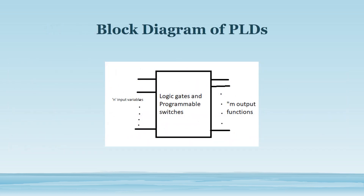This is the general block diagram representation of a programmable logic device. The PLD comprises logic gates — specifically arrays of AND gates as well as OR gates — and either of them are programmable. They are interconnected by means of multiplexers or switches. It has N input variables and can produce M output functions.